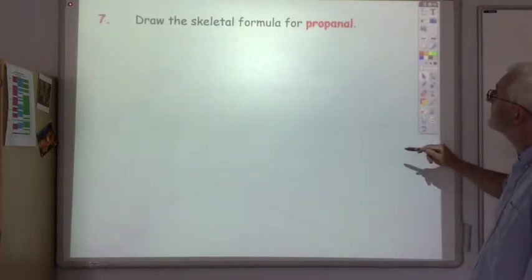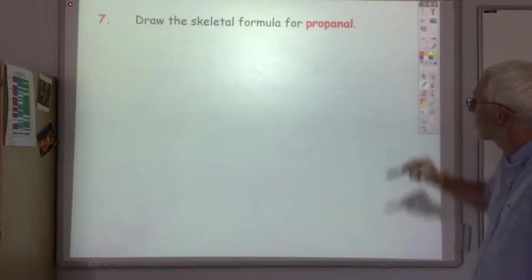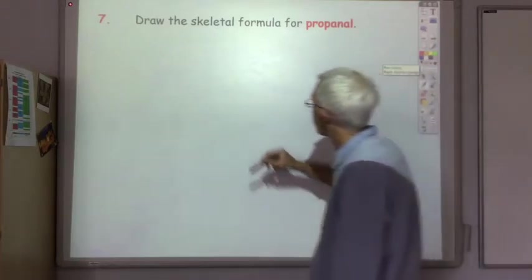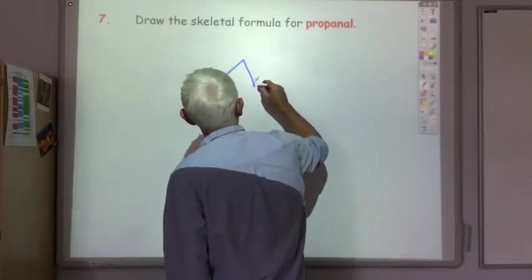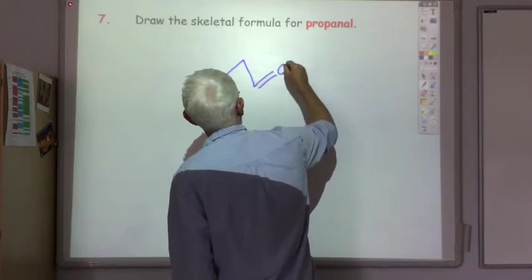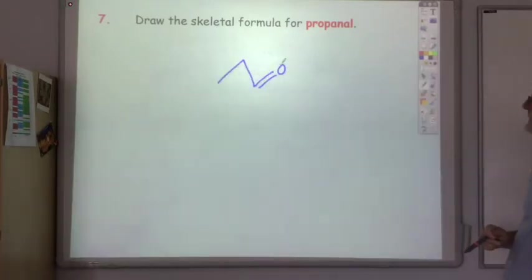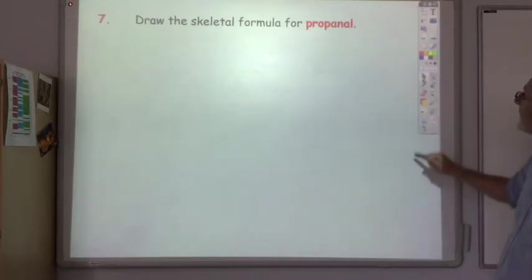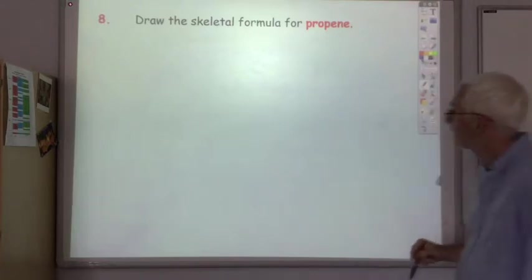Number seven: propanal. One, two, three carbons, and off the end carbon we've got a double bond O. That's propanal.